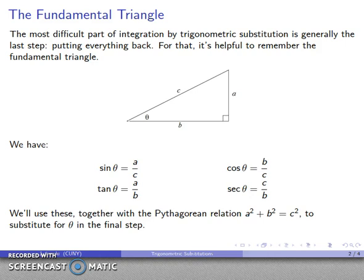If we combine these with our Pythagorean relationship for any right triangle, a squared plus b squared equals c squared, then we'll have a good and easy way of substituting for theta in the final step of the trigonometric substitution.